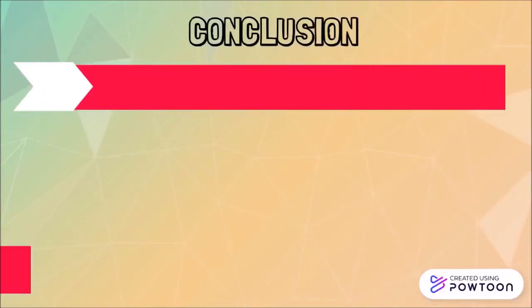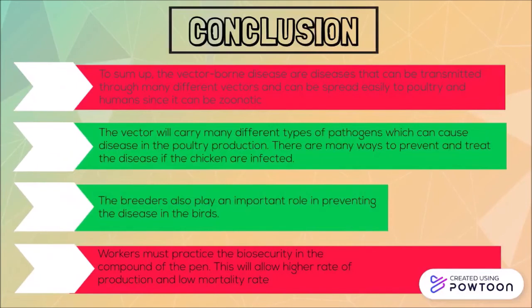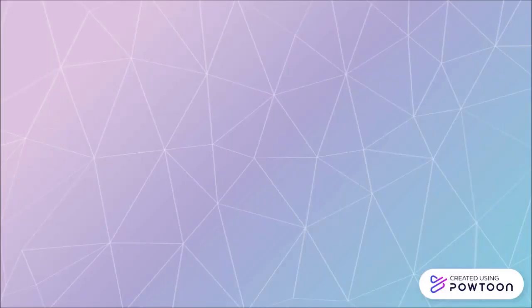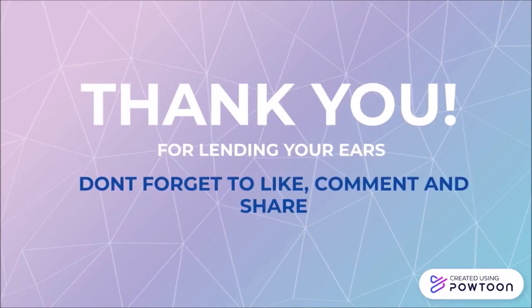To sum up, vector-borne diseases are diseases that can be transmitted through many different vectors and can be spread easily to poultry and humans since they can be zoonotic. The vectors carry many different types of pathogens which can cause disease in poultry production. There are many ways to prevent and treat the disease if the chickens are infected. Breeders also play an important role in preventing disease in the birds. Workers must practice biosecurity in the compound of the pen, which will allow a higher rate of production and a lower rate of mortality. That is all from us. Thank you so much for listening. Don't forget to like, comment, and share our video.